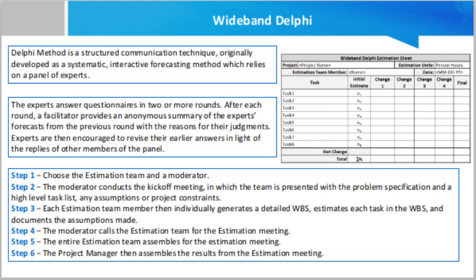Step 5.5 — each team member then revisits his or her task list and assumptions and makes changes if necessary. The task estimates may also require adjustments based on the discussion, which are noted for more effort or less effort. The team members then combine the changes in the task estimates to arrive at the total project estimate.